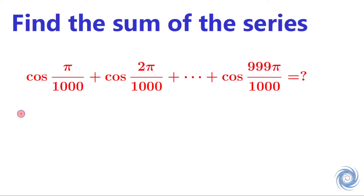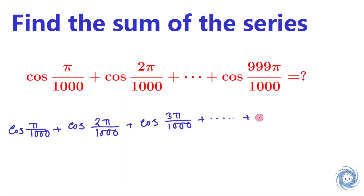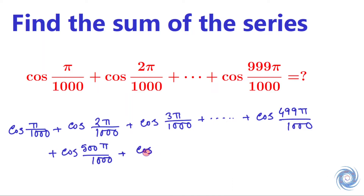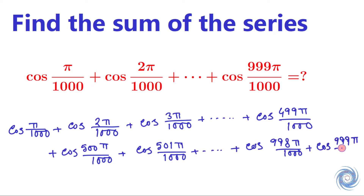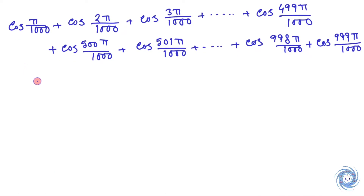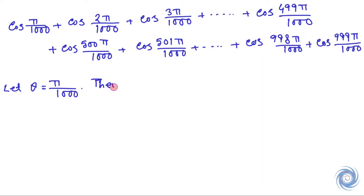We have to calculate the value of this expression. Let us assume that theta equals π/1000. Then 1000·theta equals π.